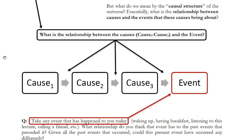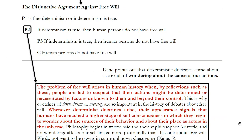When we're talking about the causal structure of the universe — whether determinism or indeterminism is true — we're asking: what is the relationship between those causes and their effects? When we say the causes in the past brought about the present moment, and what happens right now will cause what happens in the future, what do we mean by that notion of cause? Now we're going to look in more detail at each of these doctrines, and in this video we'll look at the second premise — determinism and its relationship to free will.